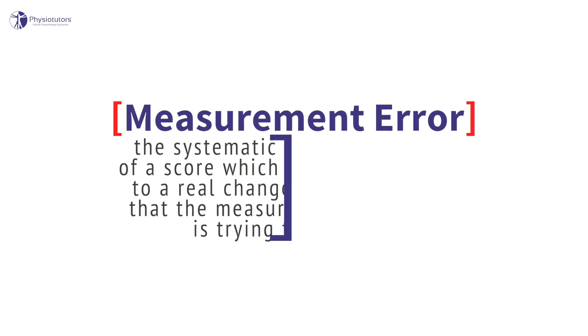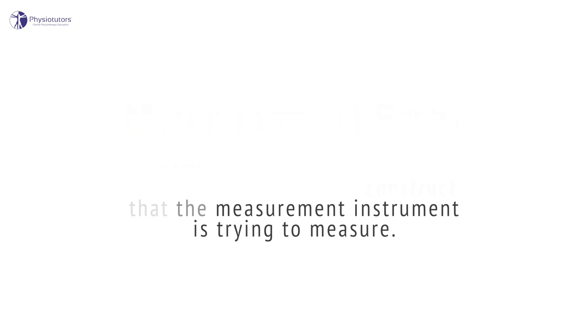So how is the measurement error calculated and which values do we commonly see in scientific papers? The measurement error is the systematic and random error of a score which cannot be ascribed to a real change of the construct that the measurement instrument is trying to measure.